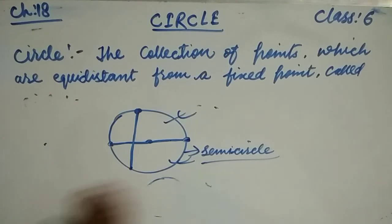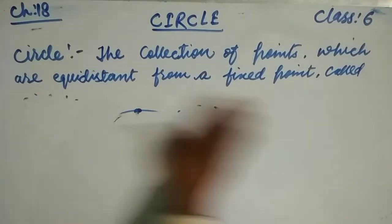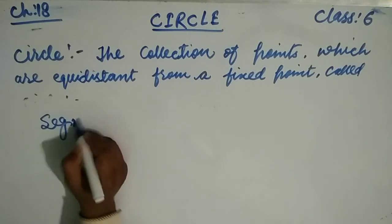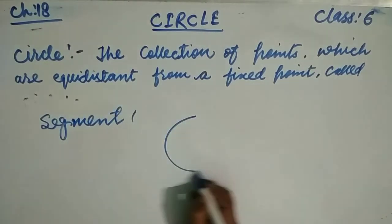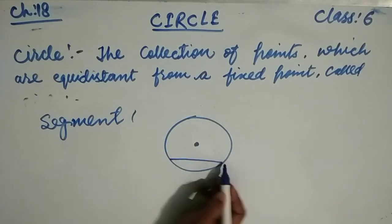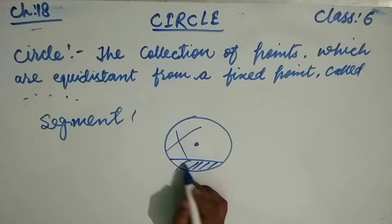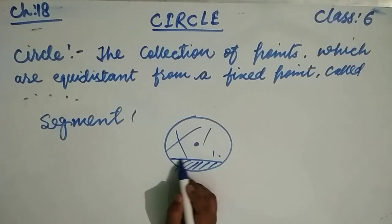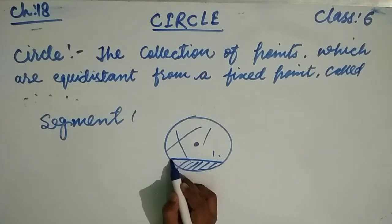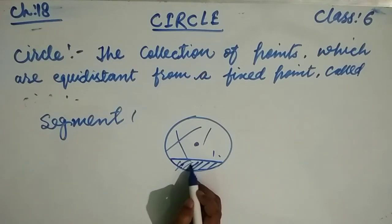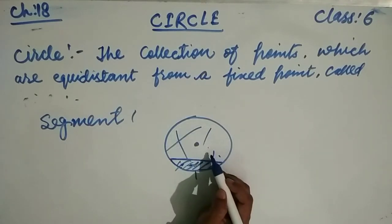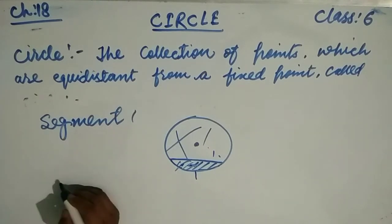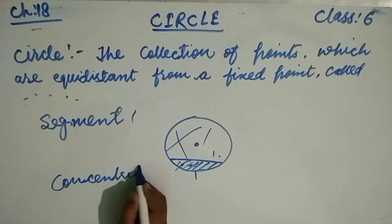The next concept is segments of a circle. There are two types of segments: minor segment and major segment. A segment is a closed figure bounded by the chord and the arc part of the circle. The smaller region is the minor segment and the larger region is the major segment.